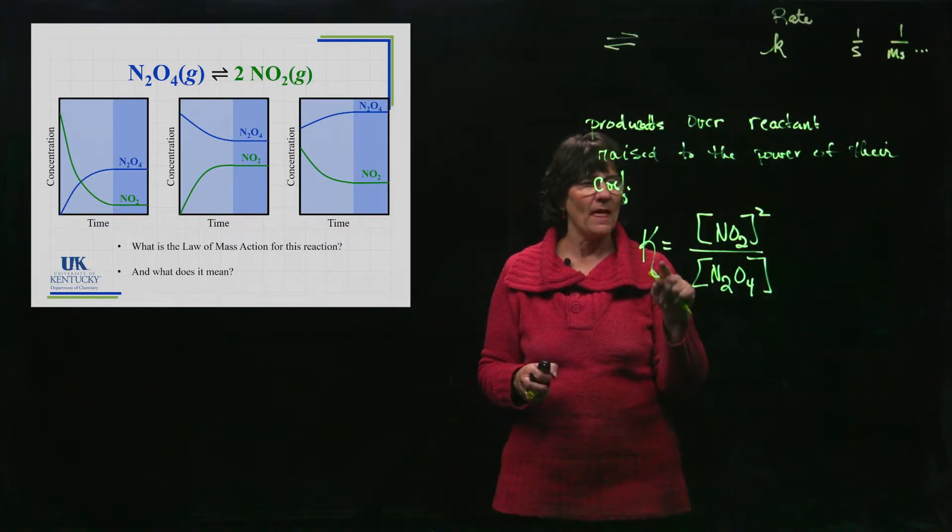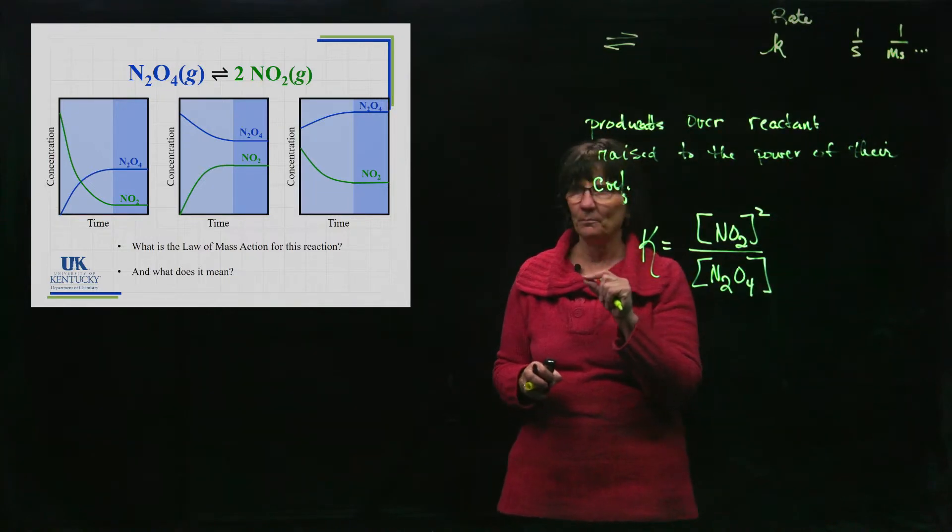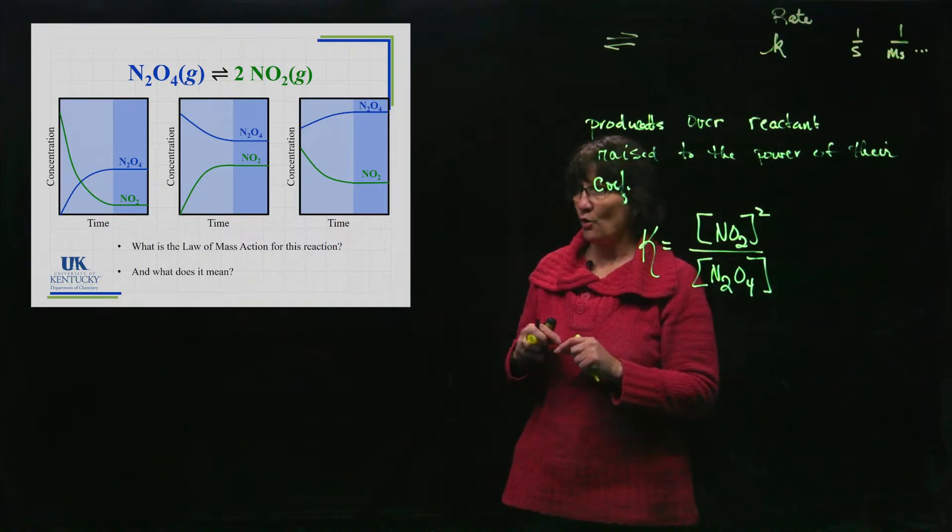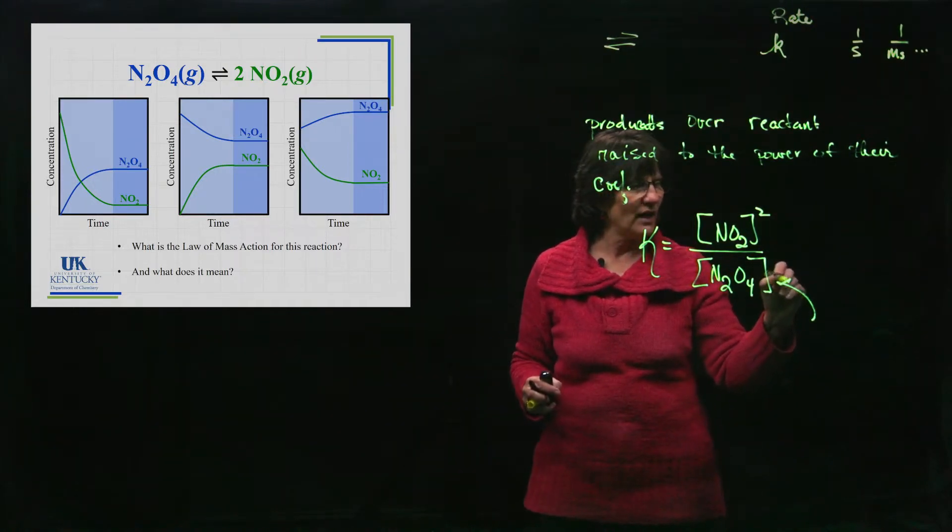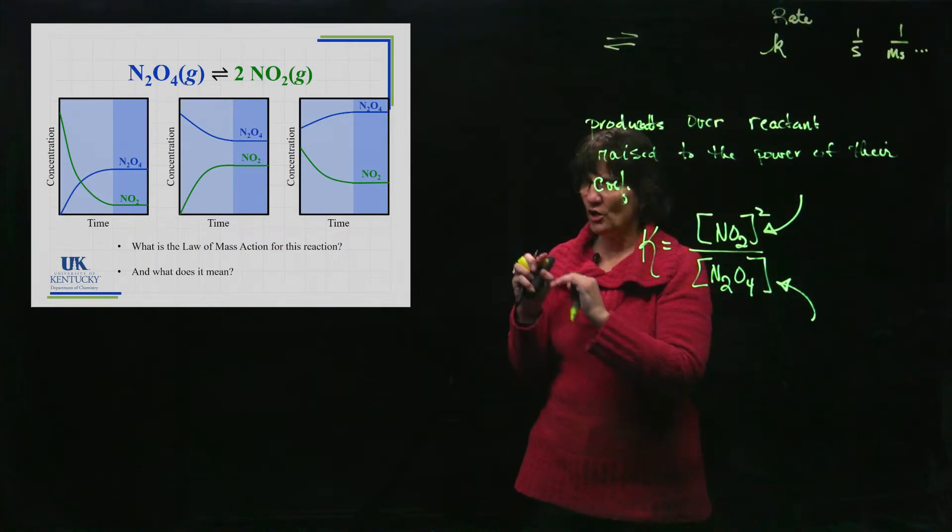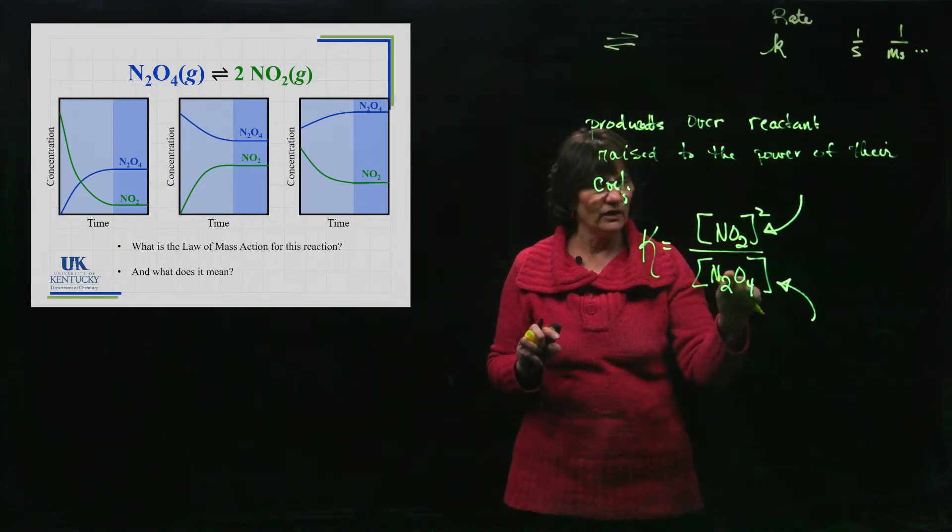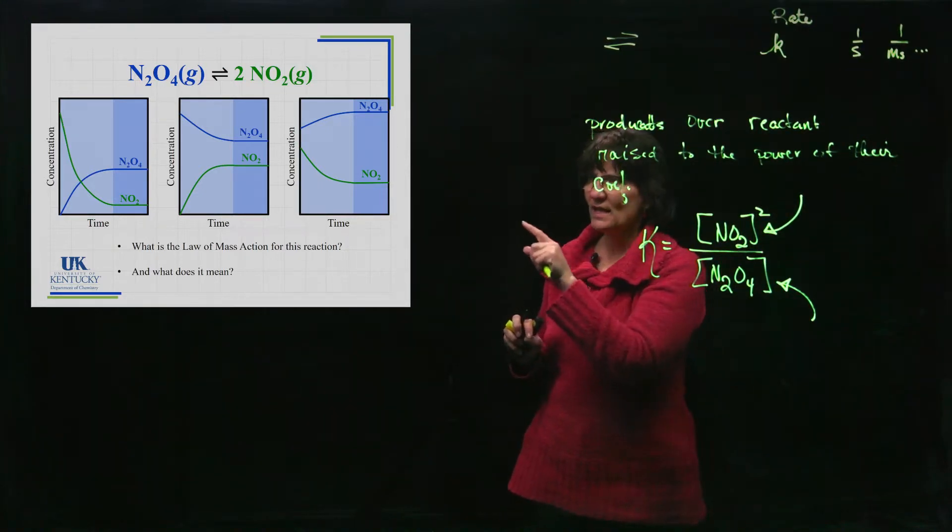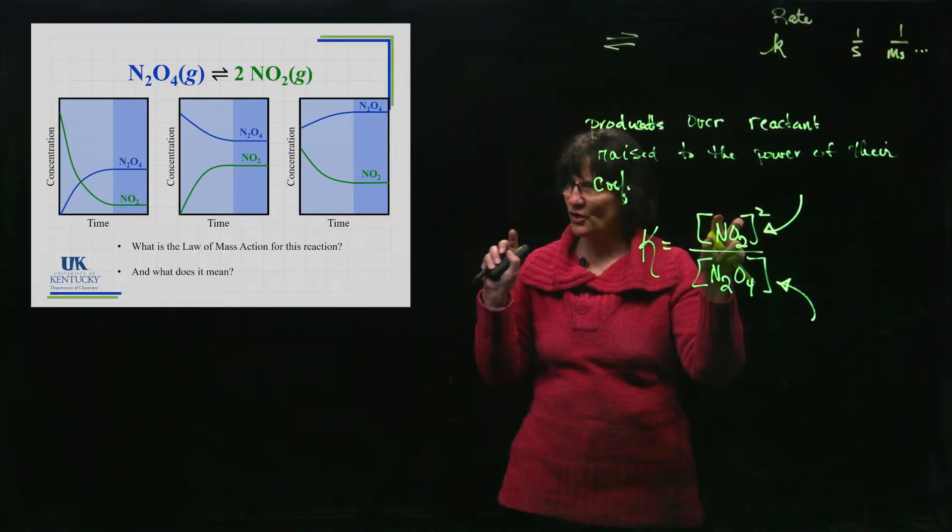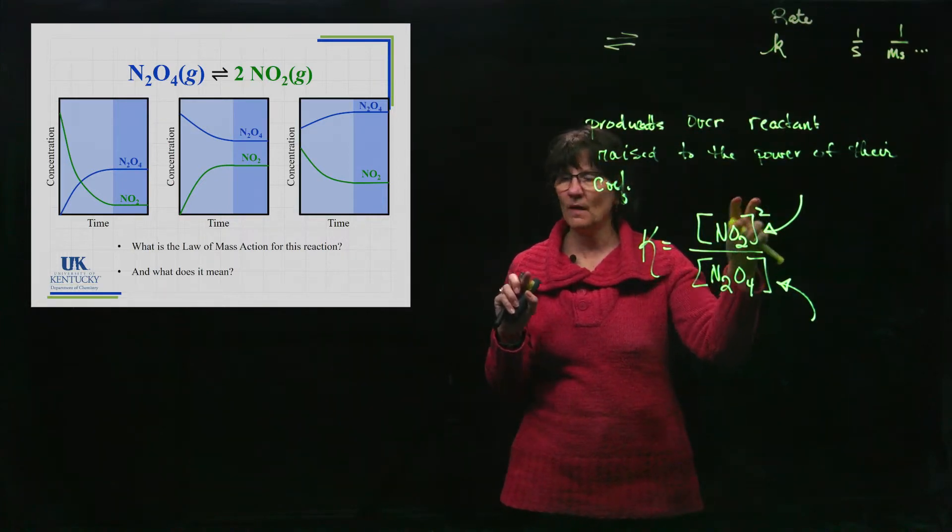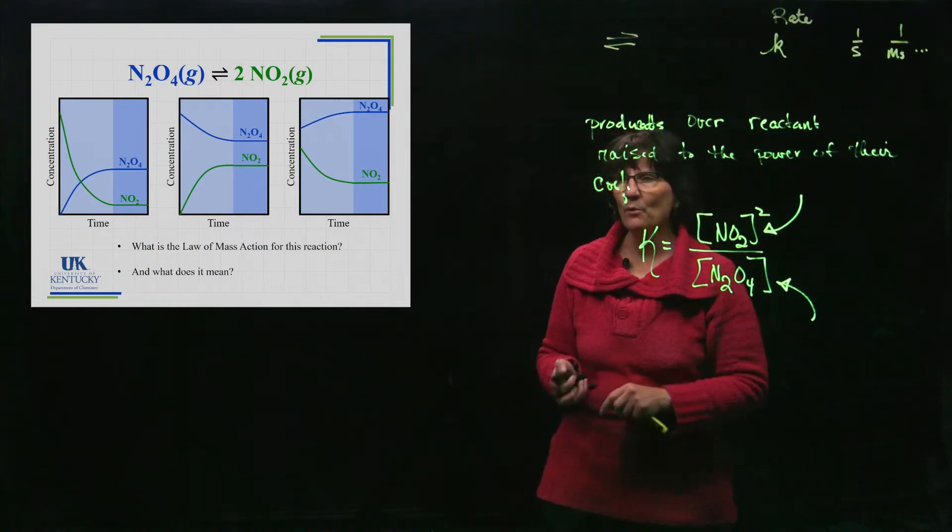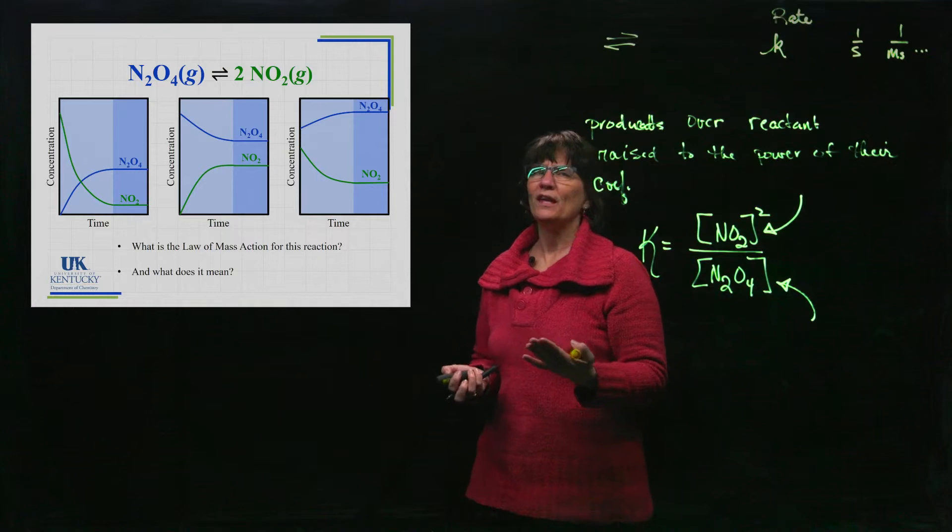So if we choose to write the reaction this way, this is its K expression, its law of mass action. So what does that mean? That means that once I get to equilibrium, if I had a way of measuring the NO2 concentration and the N2O4 concentration, and I were to plug them in here and here, I would get a constant out every time. So you can make a measurement of those equilibriums, you can plug the values in. So while it doesn't look like they have much in common when I look at them, the reality is if I took the NO2 concentration that it obtained at equilibrium and squared it and divided by the concentration of N2O4, I would always get the same number out within experimental error.